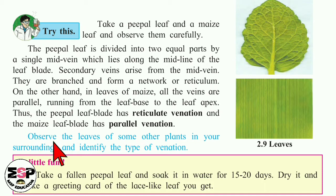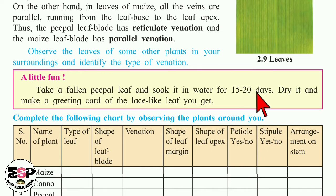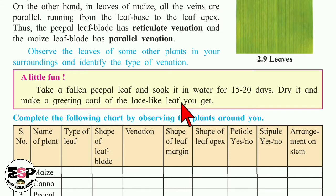Understood, children? Observe the leaves of some other plants in your surroundings and identify the type of venation. A little fun activity: take a fallen peepal leaf and soak it in water for 15 to 20 days. Dry it and make a greeting card of the lace-like leaf you get. After soaking, you will get only the network of the veins, as the rest of the leaf blade will decompose and fall away. So you can make a greeting card of it.